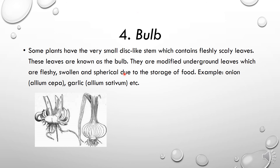The fourth type of underground modification of the stem is the bulb. Some plants, like onion, have a bulb-like stem. They contain fleshy, scaly leaves called scales. These are modified underground leaves which are fleshy, swollen, and spherical due to the storage of food. For example, onion and garlic. In the case of onion, it has a disc-like appearance. This type of stem is called a bulb.